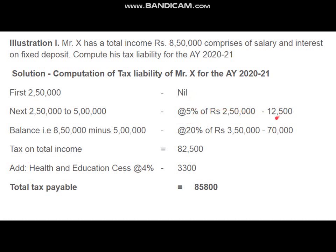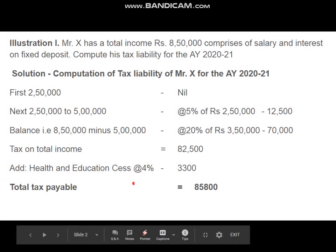So the tax on that 2 lakh 50,000 at 5 percent is 12,500. Here the total income is 8 lakh 50,000, so the balance — that is 8 lakh 50,000 minus 5 lakh — the additional 3 lakh 50,000 is taxable at the rate of 20 percent, giving a tax amount of 70,000. This is based on the tax rate we have already studied.